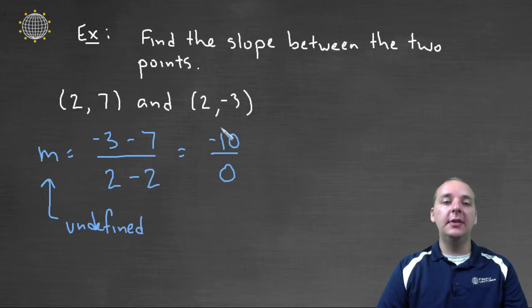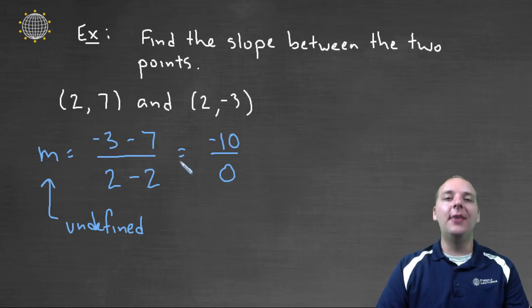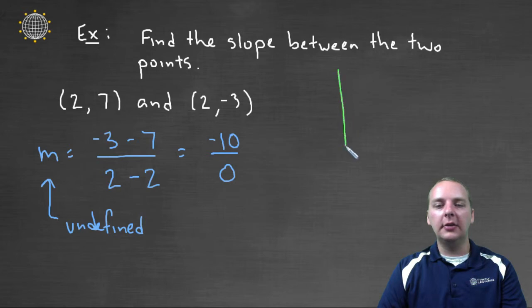So when you have zero over a number, you can have a slope of zero, that's fine, but you cannot divide by zero. So here, since we have division by zero, this has an undefined slope. Now what in the world does that look like? Because maybe we're having trouble visualizing what that means exactly. Well, look here, if we have one, two, comma, one, two, three, four, five, six, seven,